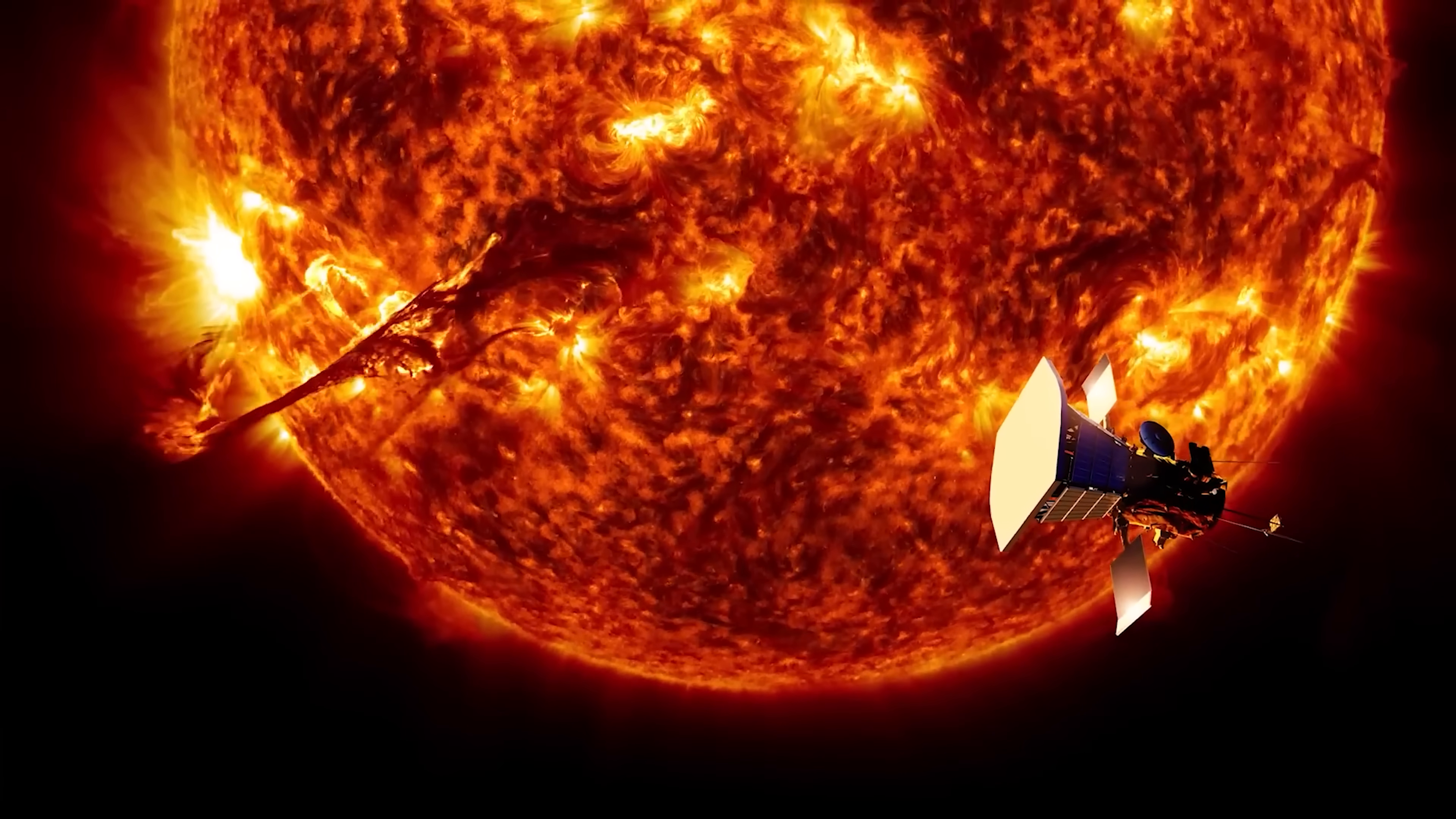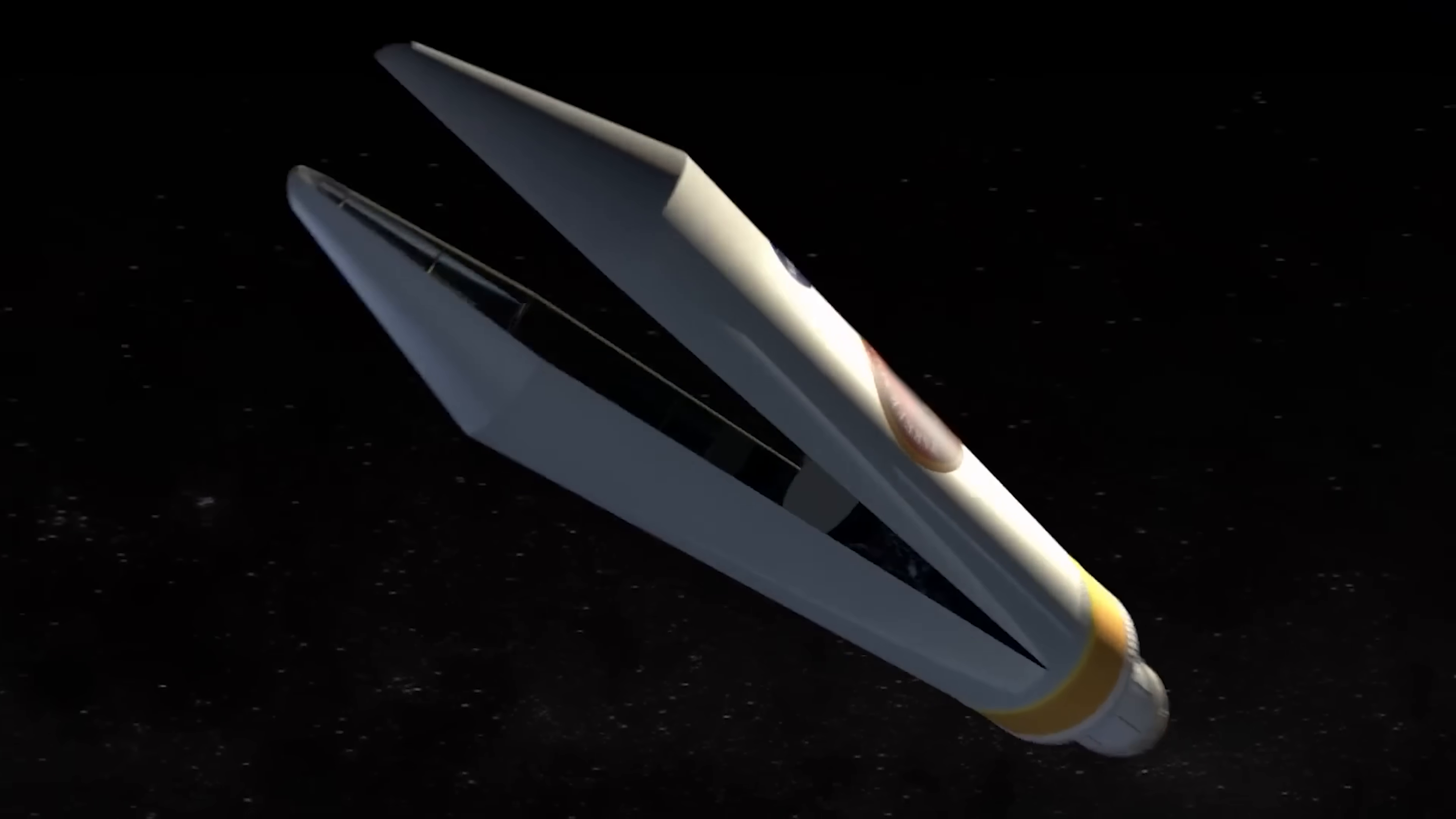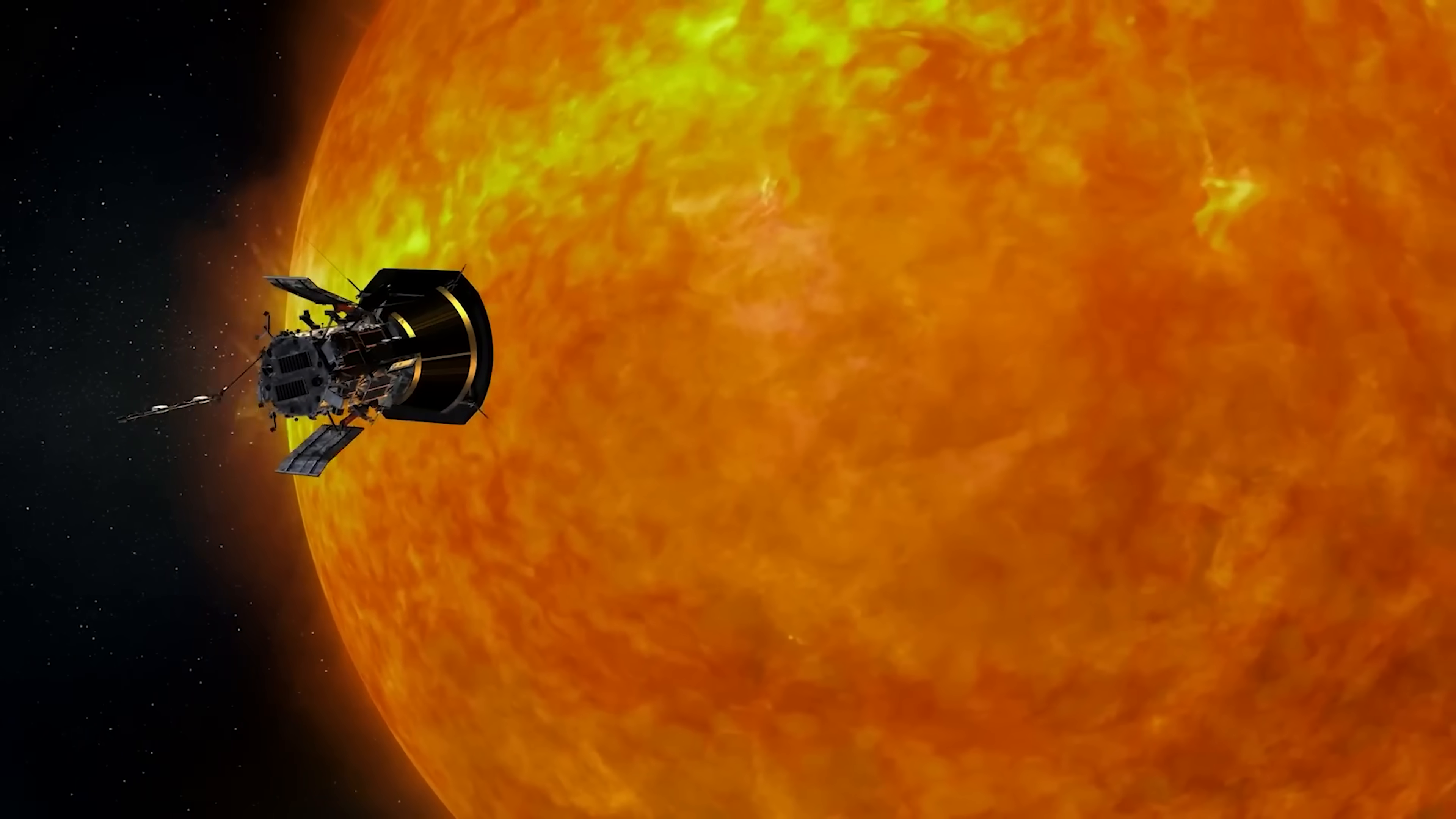This little beast is called the Parker Solar Probe, and it's one of the most ambitious space missions in human history. Think of it as a daredevil spaceship with one mission: get closer to the Sun than anything before it and survive.